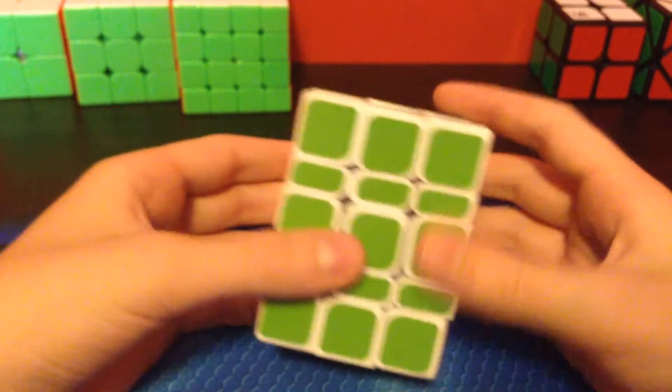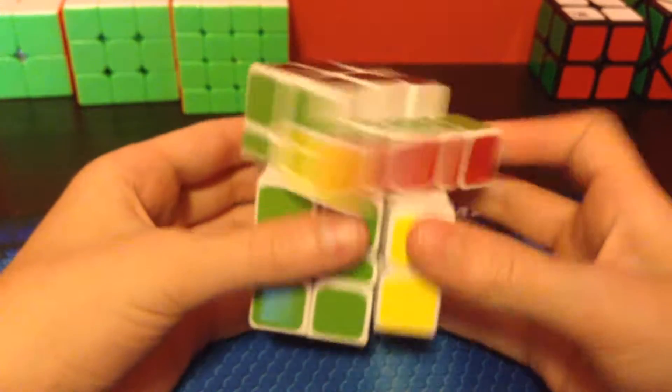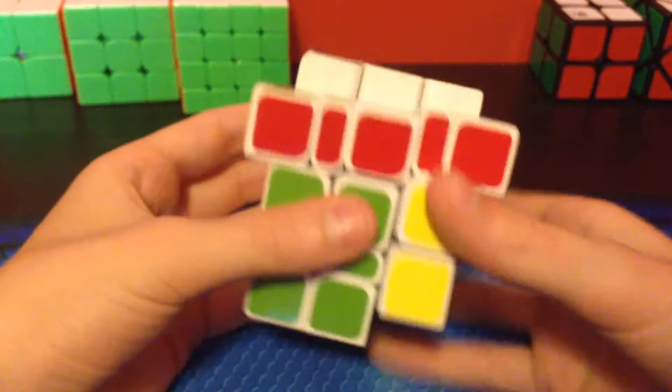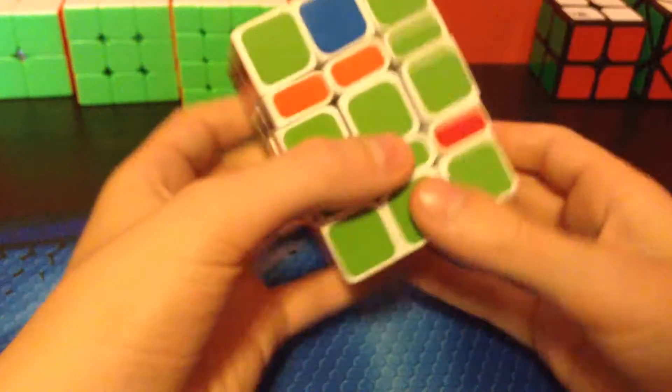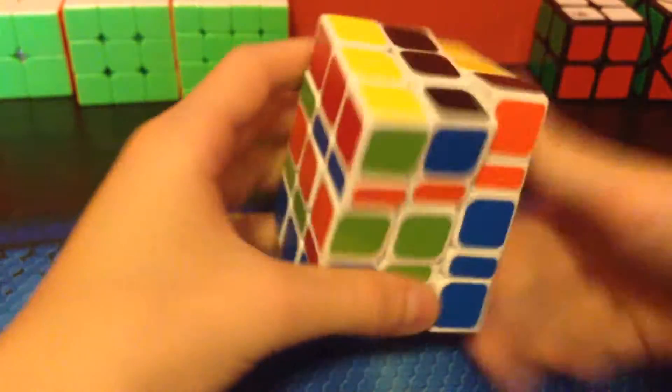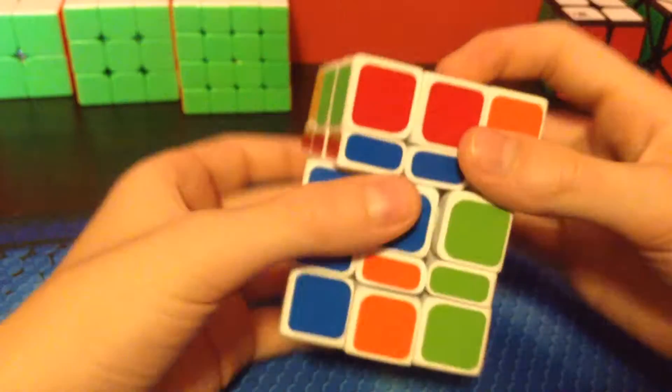So with the 3x3x5, before doing the shape shifting moves like this, you have to scramble it with these kinds of moves, because when you do the shape shifting moves, it bandages